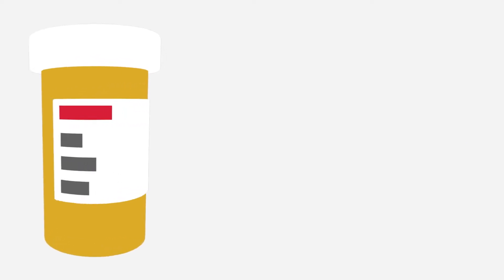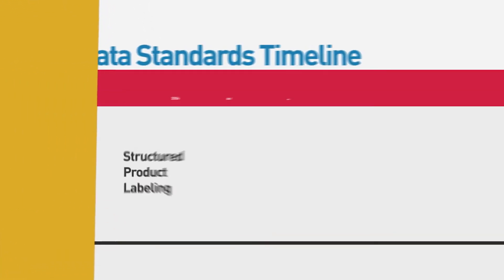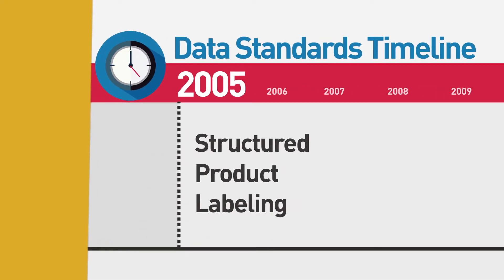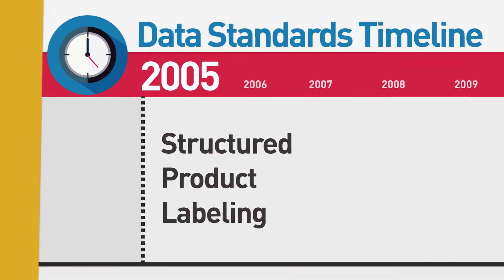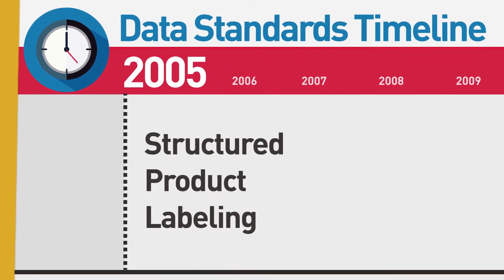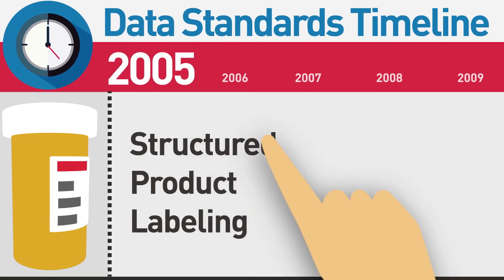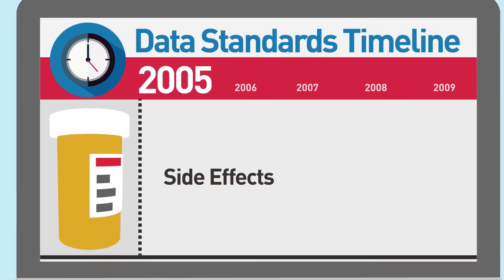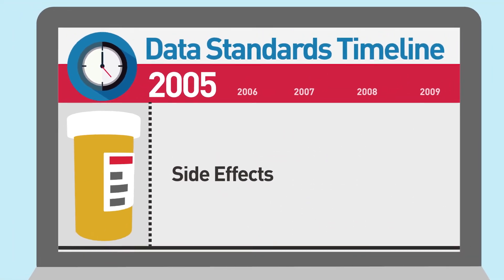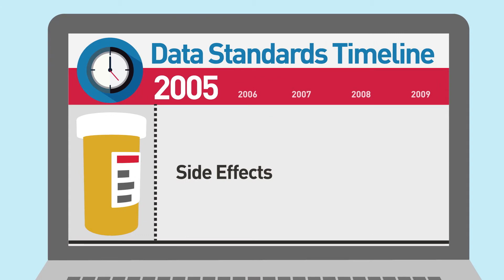Some data standards have been required for years. Take structured product labeling. It's a standard way for manufacturers to record product and facility information and share it with the FDA. It's been required since 2005. Anyone can look up electronic drug labels and easily find information like side effects, because every label is organized in a standard format.